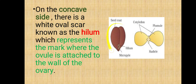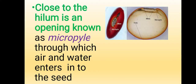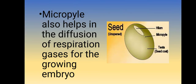On the concave side there is a white oval scar known as the hilum, which represents the mark where the ovule is attached to the walls of the ovary. Close to the hilum there is a small opening known as the micropyle, through which air and water enter into the seed. The main function of the micropyle is for respiration of the growing embryo.